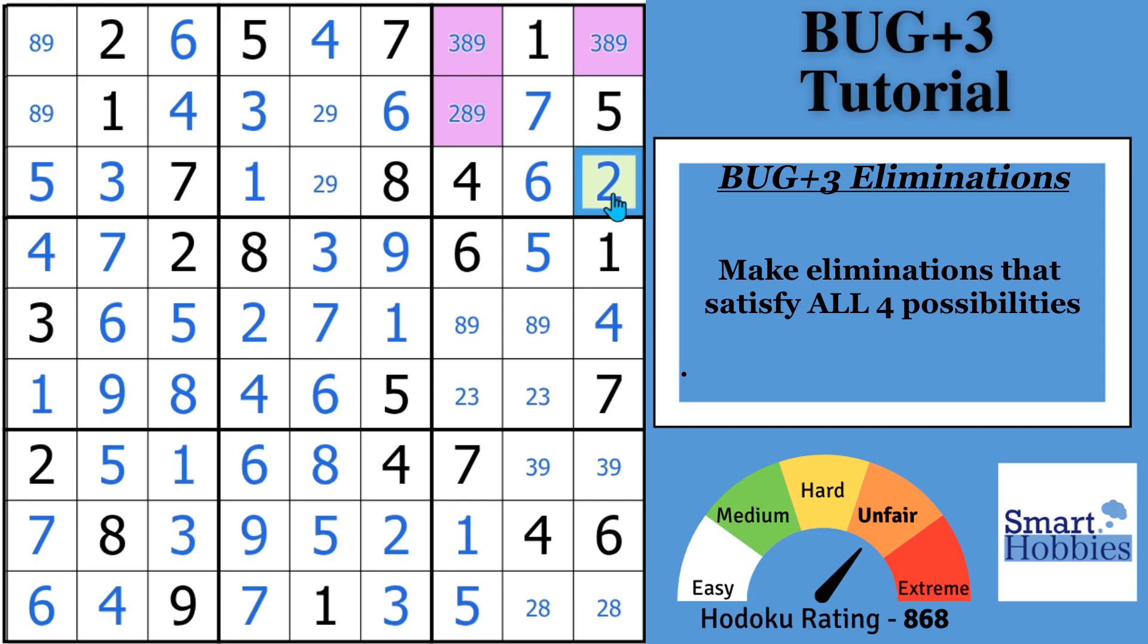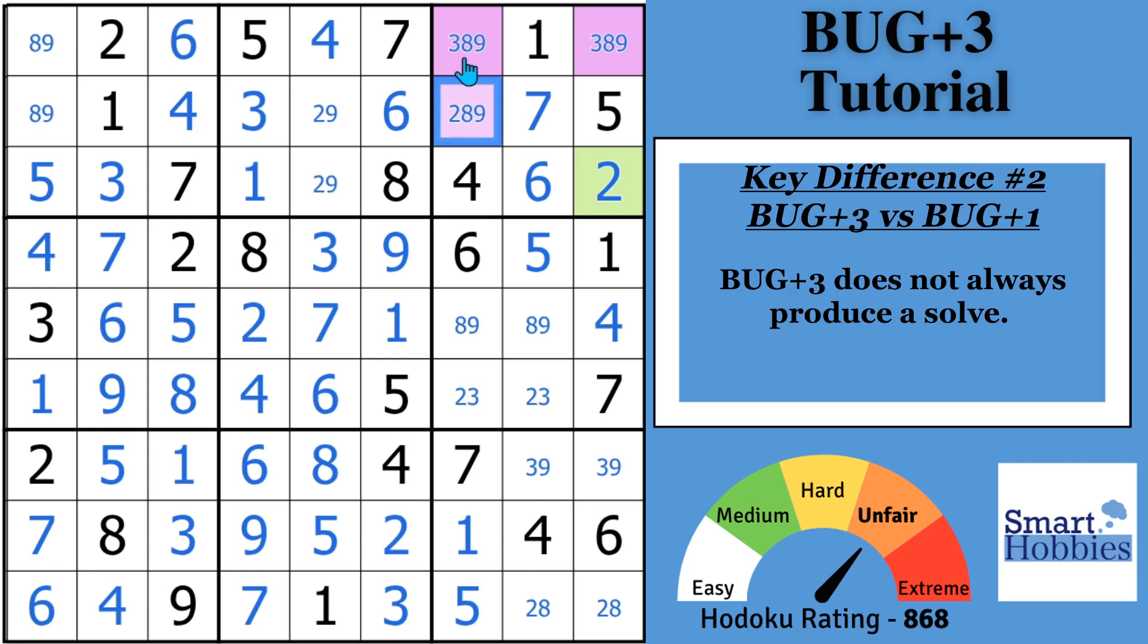And I also want to make another point clear. Even knowing and seeing a BUG+3, you're not always going to get a solve. You do always get a solve with a BUG+1, but not with a 2 or a 3. You could have a BUG+7 even. All you can do is go, one of these situations has to be true or a combination of the 3. But in this case, you are able to make a solve. You can solve that cell for a 2.